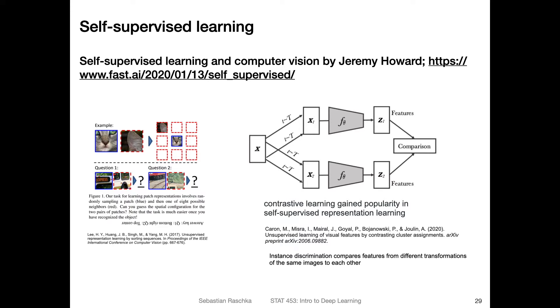One thing that became very popular in the last couple of years was self-supervised learning. Last lecture, I explained how self-supervised learning works in a nutshell. Essentially, it's about leveraging unlabeled data where you create some artificial labels that you can then use for supervised learning.